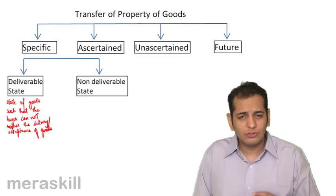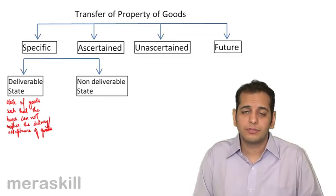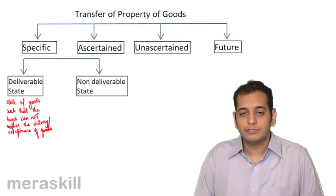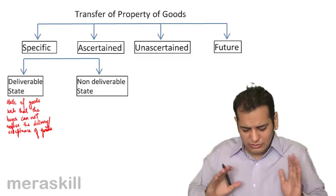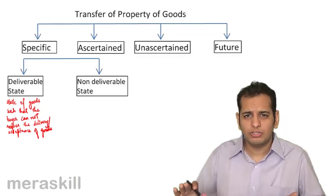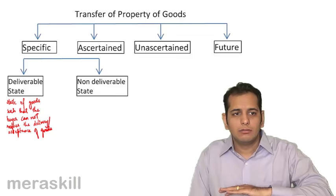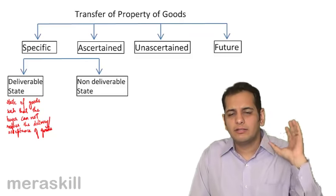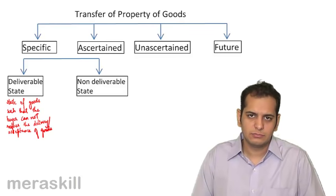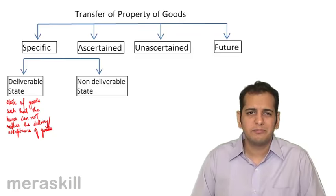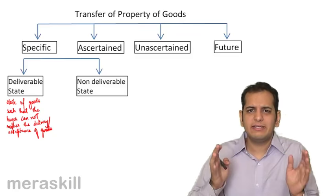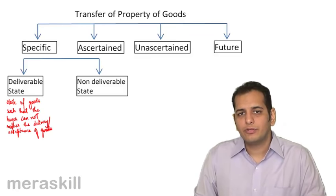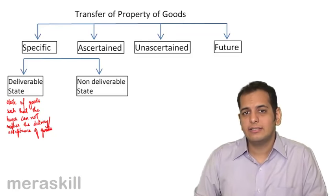Deliverable state is that state of goods wherein the buyer cannot refuse acceptance of delivery — he cannot say the goods are not complete or not finished. Everything required to make them a finished product — cutting, polishing, testing, packaging, finishing touches — has been done. All processes are complete and if you deliver the goods to the buyer, he will be bound to accept them.